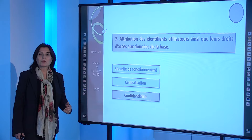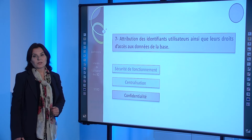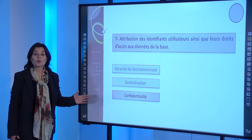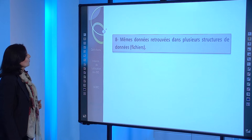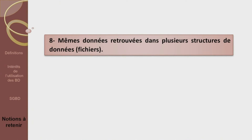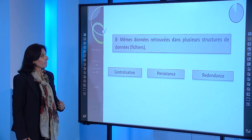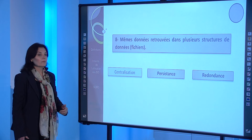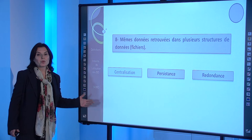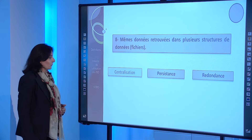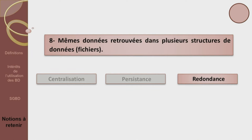La confidentialité est assurée par l'attribution des droits d'accès à chaque utilisateur. Il faut rappeler qu'à la création d'un utilisateur, aucun droit d'accès ne lui est attribué, même pas la consultation des données. Huitième définition : mêmes données retrouvées dans plusieurs structures de données. Est-ce la centralisation, la persistance ou bien la redondance ? La centralisation, c'est le fait de créer les données dans une structure centrale et de régler l'accès via le réseau et les droits d'accès. La persistance, c'est la sauvegarde et la disponibilité des données. C'est donc sans doute la redondance. Nous arrivons ici à la fin de notre leçon. Je vous remercie pour votre attention et à bientôt.